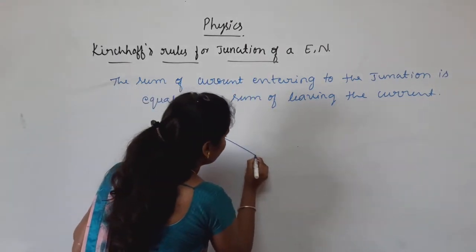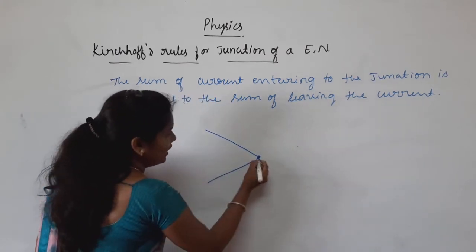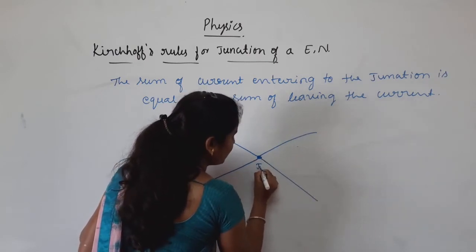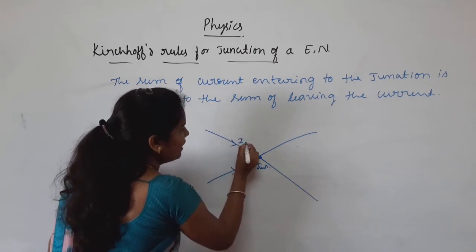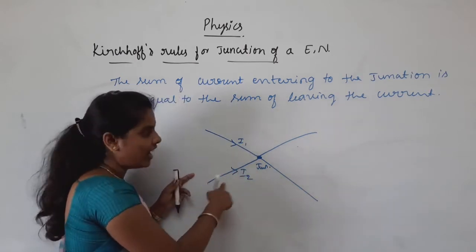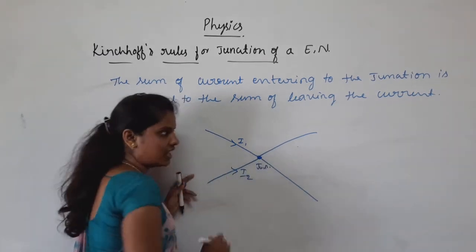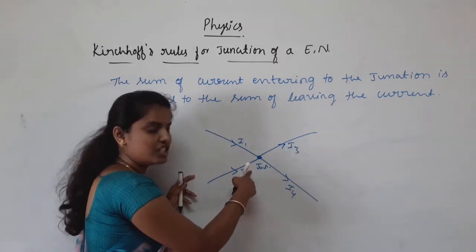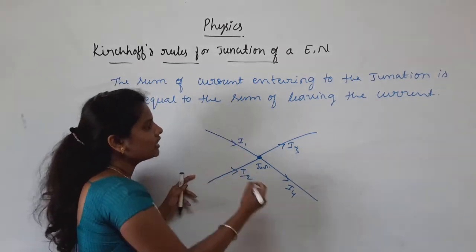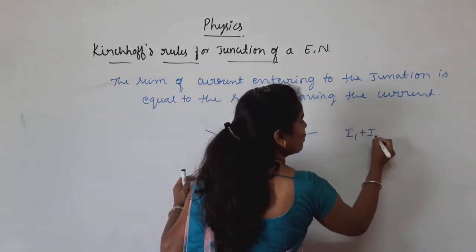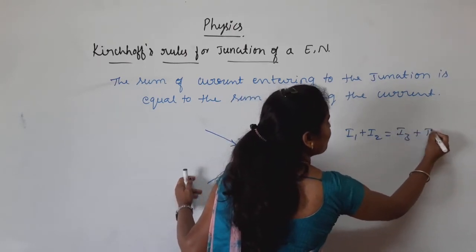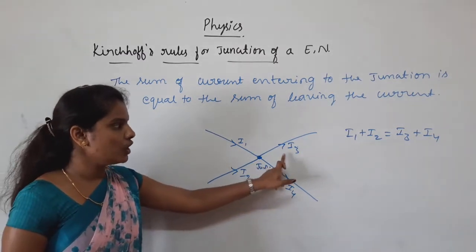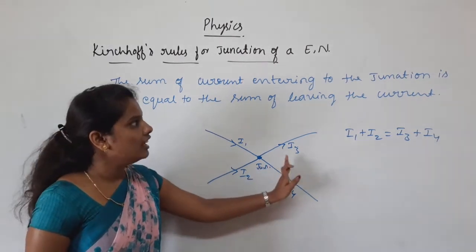This can be understood by an example. Consider a point in an electrical network called a junction. Here I1 and I2 are two currents entering this point, and I3 and I4 are the leaving currents from the junction. According to this statement, I1 plus I2 equals I3 plus I4. The sum of the entering current to the junction equals the sum of the current leaving the junction.